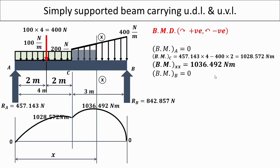For the bending moment diagram, bending moment at ends A and B is zero. At C, considering forces to the left: Ra into 4 (457.143 into 4) minus the UDL converted point load 400 into 2 gives 1028.572 N·m. Bending moment at XX is 1036.492 N·m. The distribution is parabolic over the UDL region and cubic over the UVL region. This completes the shear force and bending moment diagram for the simply supported beam.